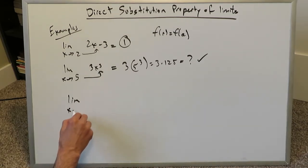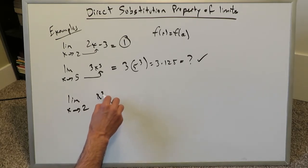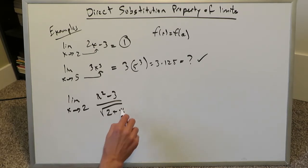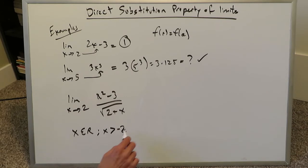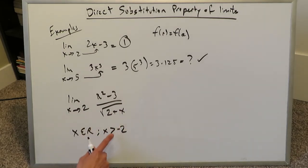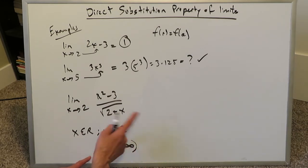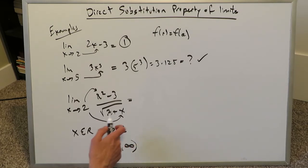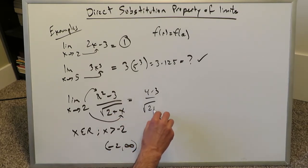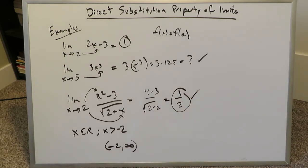Here's another rational function: limit as x approaches 2 of (x squared minus 3) over the square root of (2 plus x). Looking at the denominator, the domain requires x greater than negative 2, since you don't want a zero or a negative under the radical. Any value larger than negative 2 is acceptable, and 2 falls well within this domain. Substituting gives (4 minus 3) over the square root of (2 plus 2), which is 1 over 2 — an acceptable limit answer. But there are a few exceptions to this direct substitution property which we will look at next.